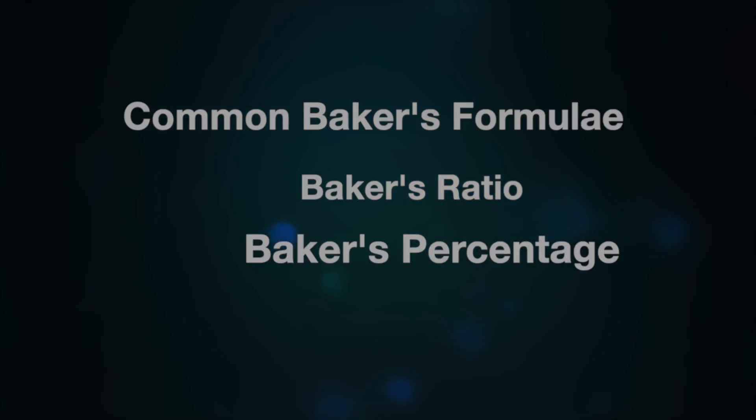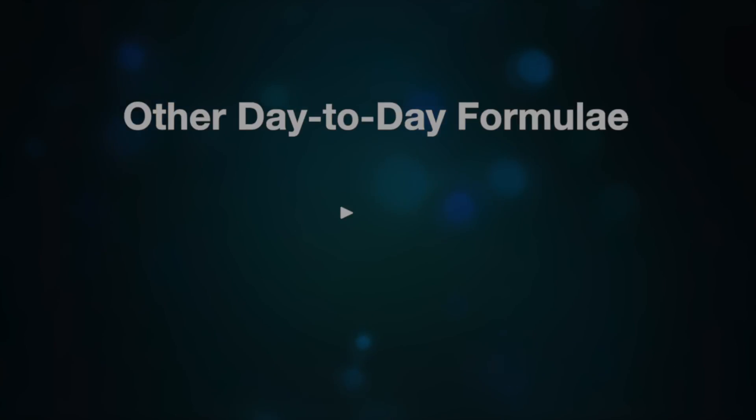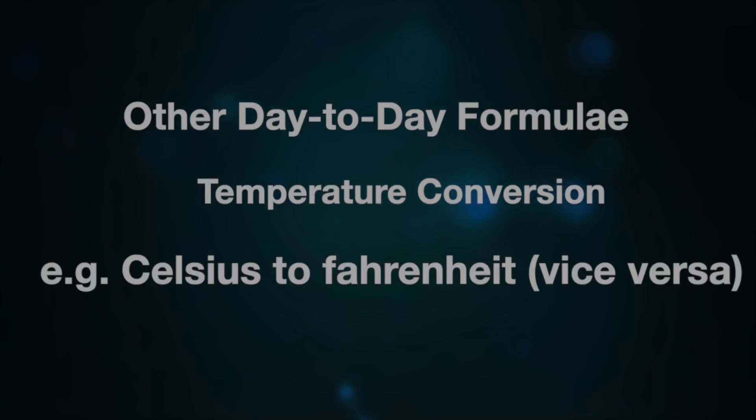Baker's mathematics formulas include the baker's ratio and the baker's percentage — you can use either of these two. There are also day-to-day formulas, like temperature conversion. For instance, if you see someone using Celsius, you should have a formula that converts it to Fahrenheit if you're in the part of the world that uses Fahrenheit.